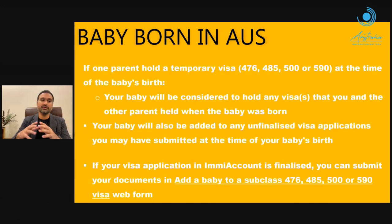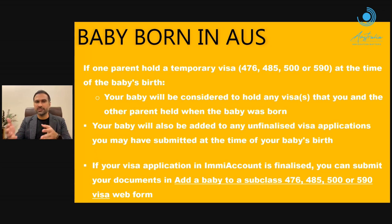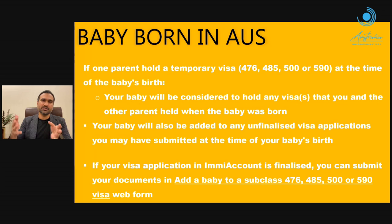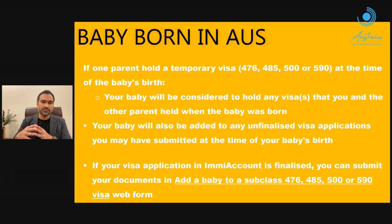Now let's take up the scenario where one parent holds a temporary visa of subclasses 476, 485, 500, or 590, which are generally student and post-study visa related subclasses. Your baby will be considered to hold any visa that you and the other parent held when the baby was born, and will also be added to any unfinalized visa applications. If someone is on a student visa and has also applied for a work or skilled migration visa, the baby will be added to those applications as well. If your visa application in your ImmiAccount is finalized, you can submit your documents via the 'add a baby to a subclass 476, 485, 500, or 590 visa' web form.